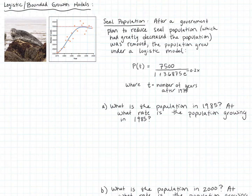A logistic growth model is where you experience exponential growth for a period of time, but then you hit some carrying capacity. This is often the case with populations, because populations in the natural world can't grow without bound. The environment can only sustain so much — the clearest example is world population, since the Earth can only sustain so many humans.